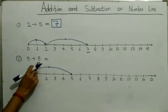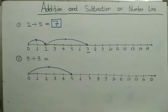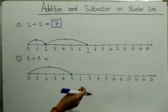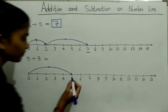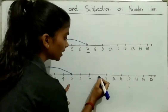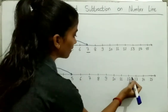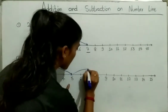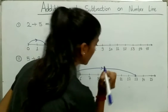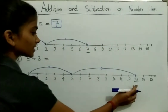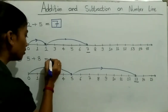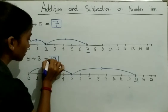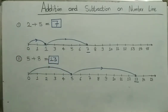And the second number is 8. So we will jump 8 more steps to the right from 5. So the sum of 5 and 8 is equal to 13. This is done.